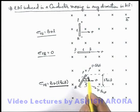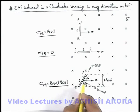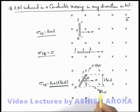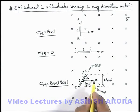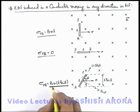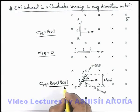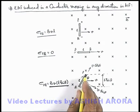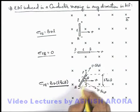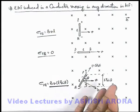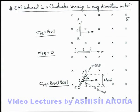You must be careful: whenever a conductor is moving such that its velocity is not perpendicular to its length or to the magnetic field, you need to consider the velocity component and length component that are perpendicular to both the magnetic field and velocity. You can then directly use the expression for motional EMF to calculate the EMF induced across the ends, and the direction or high/low potential end can be obtained using the right-hand palm rule, as discussed previously.